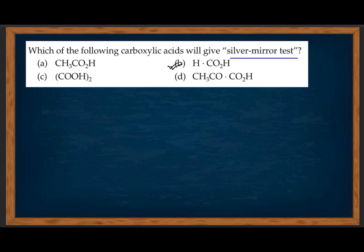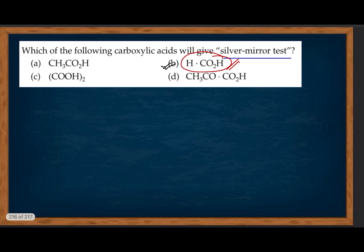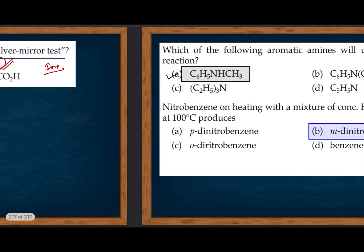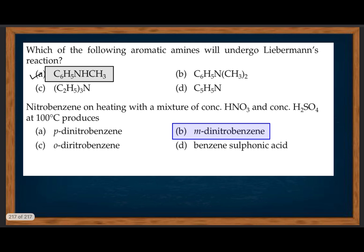Which of the following carboxylic acids will give a silver mirror test? Formic acid gives silver mirror test — this is an important exception. Formic acid, unlike other carboxylic acids, has an aldehyde-like reducing property.